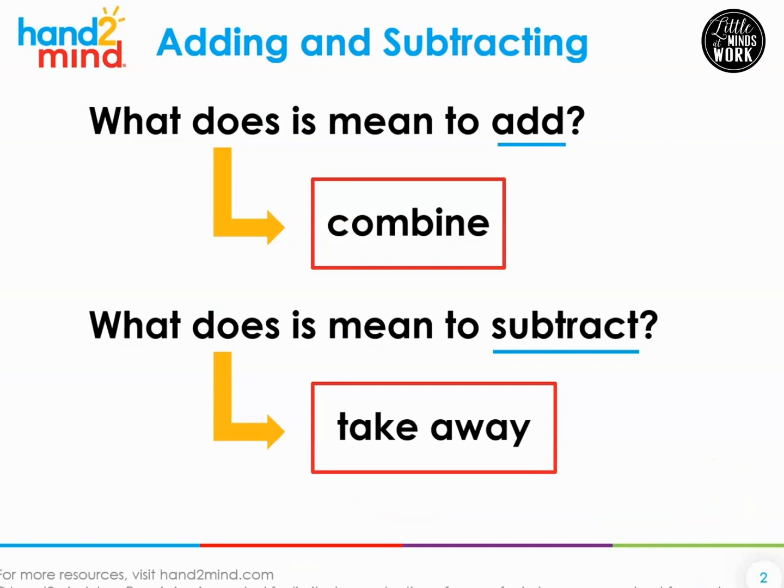Today we're going to talk about adding and subtracting, but we're going to not be talking about them as separate like we've been. We've been practicing just addition or just subtraction. Now we're going to talk about seeing them together. What does it mean to add? When someone says to add, they mean to combine. They want you to take two parts and put them together. Look down at your fingers. Put up one hand and the other hand. That's two parts, 5 and 5. Now clap your hands together. What is 5 and 5? 10. Yes, you just added.